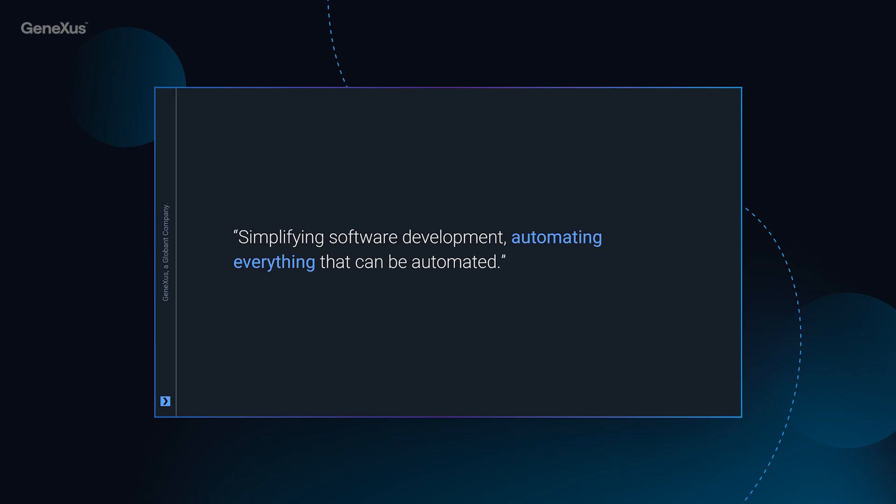G-Nexus Next is the new IDE for low-code software development powered by AI. Starting from the vision that we have had for more than 30 years of G-Nexus to simplify software development by automating everything that can be automated.